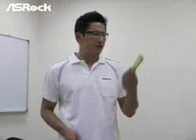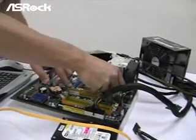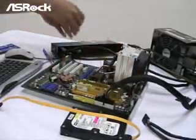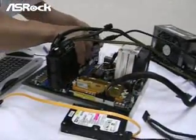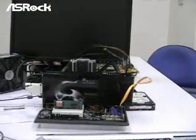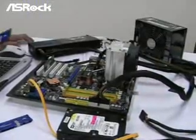After testing the QX9770 FSB 1600 CPU with APESA and Kingston DDR2-800 modules on the G-Brand P45 motherboard, now we're doing the same test on the M-Brand P45 motherboard. The CPU is installed already, and now we put in the APESA DDR2-800 modules. Let's power on the system — it booted up fine.